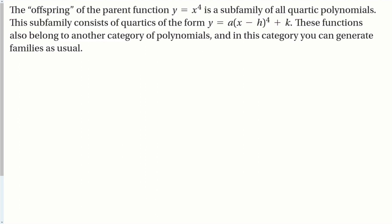The offspring of the parent function x to the 4th is a subfamily of all quartic functions — they look like a(x minus h)⁴ plus k. If the function does not look like that, if it has multiple terms, it is not a transformation of the parent quartic function.